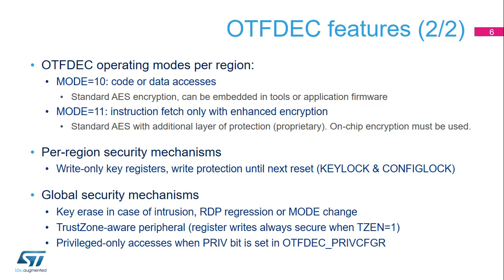For each region, the operating mode has to be selected. If the region contains both code and data, the mode field of the region configuration register has to be set to binary value 1.0. In this case, an additional layer of protection is added on top of the standard AES encryption algorithm, and the encryption process cannot be embedded in software tools — OTF-DEC must be used to perform the encryption.